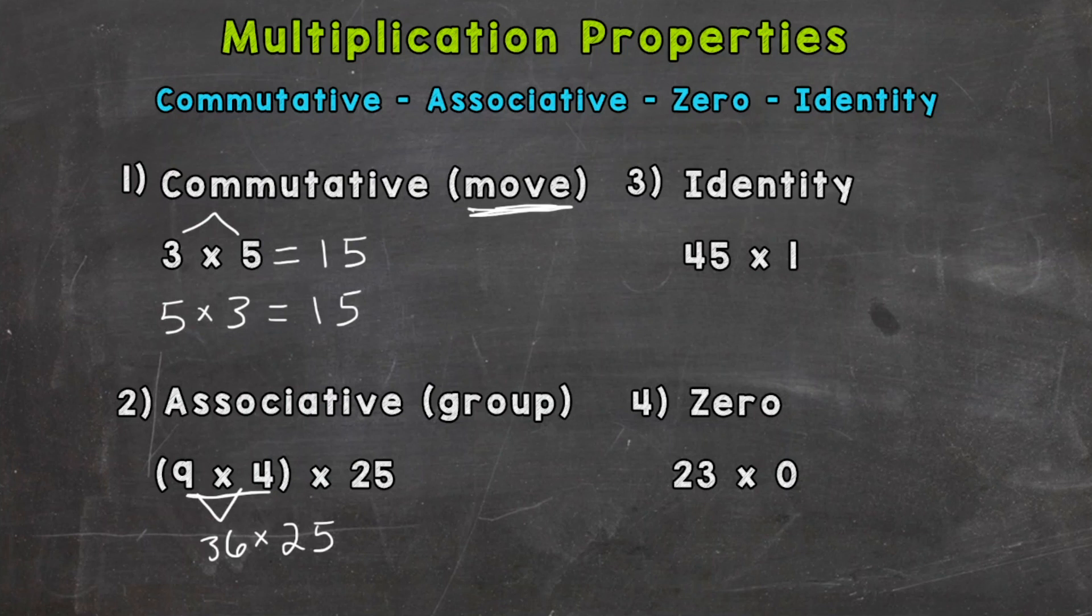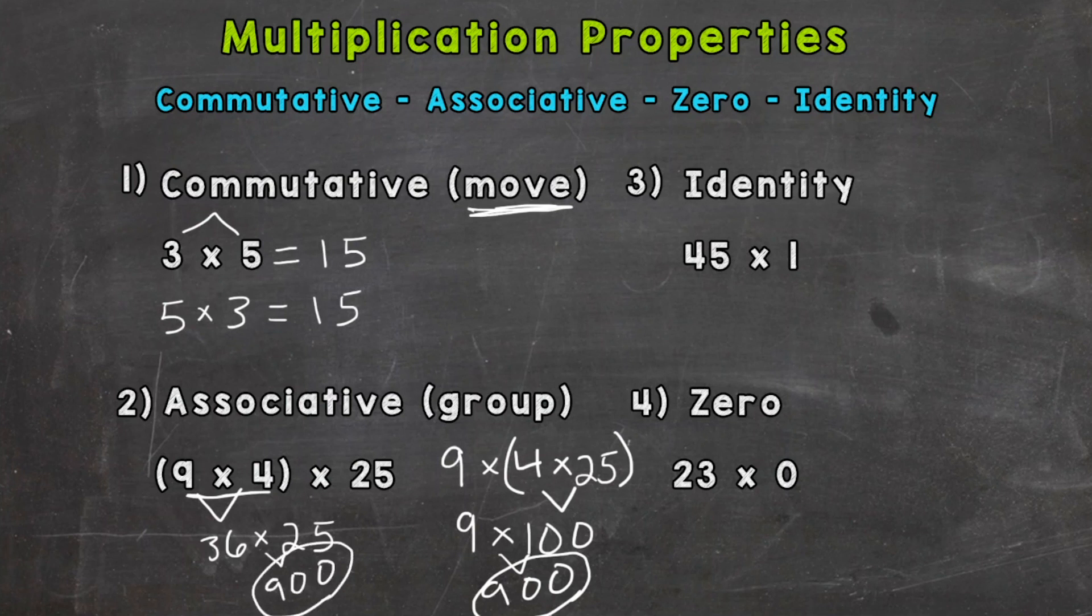Now the associative property can make that problem easier for us. What if we grouped the 4 and the 25 and did that part of the problem first? Well, 4 times 25 is 100, bring down our multiplication sign and the 9, and now we have a nice and easy mental math problem. 9 times 100 is going to give us 900. 36 times 25 is also going to give us 900, but which problem was able to be solved easier? Well, when we grouped the 4 and the 25, because we could use mental math strategies to solve that. So associative, think group.